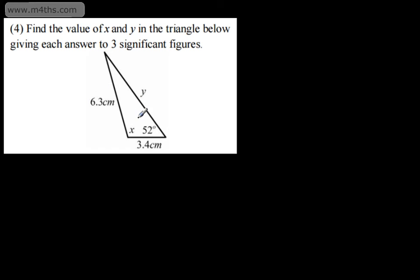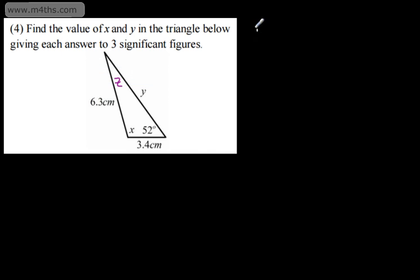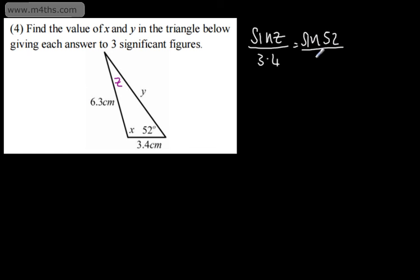Clearly, we're not going to use the cosine rule for a missing angle as we only have two sides. As a result, I'm going to call this angle just here angle z. So using the sine rule to find angle z, I can write: sine z over 3.4 will be equal to sine of 52 degrees over 6.3. Once I've solved for z, I simply subtract z and 52 from 180, which will give me x. So sine z, multiplying both sides by 3.4, gives 3.4 sine 52 over 6.3.